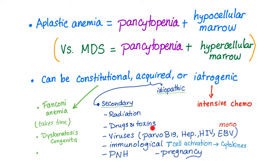Toxins such as arsenic, benzene, and gold. Quick recap of arsenic poisoning: you'll have sensory motor polyneuropathy, aplastic anemia with pancytopenia, and basophilic stippling of the RBCs. Whenever you hear basophilic stippling, that doesn't mean stippling of the basophils — it means the RBC has some little basophilic dots.